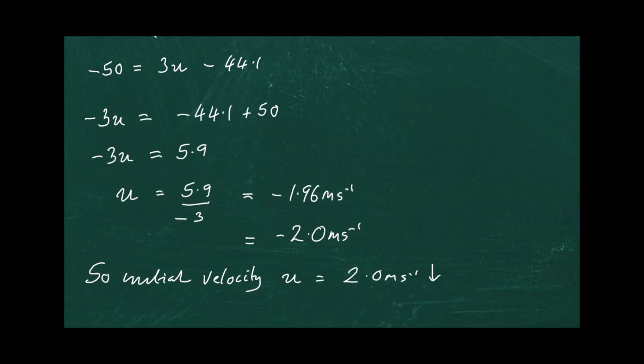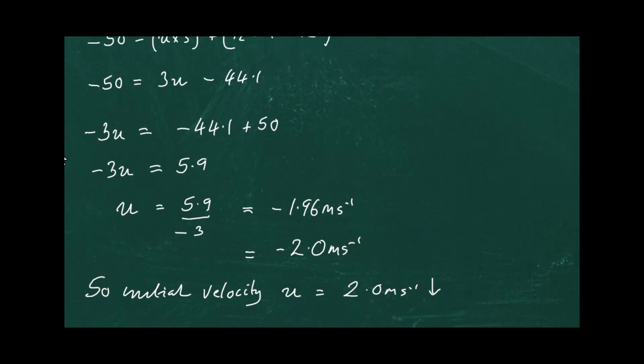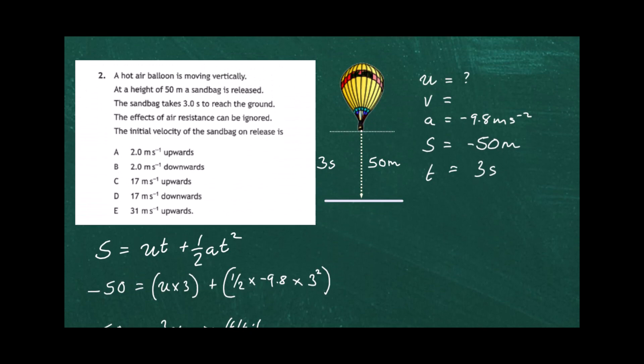Dividing both sides by minus 3 gives u equals 5.9 divided by minus 3, which is approximately minus 1.96 meters per second — we can call that minus 2 meters per second. The negative sign means the balloon was moving downwards, so the initial velocity is 2 meters per second downwards. Looking at the responses, the answer for question 2 is B.